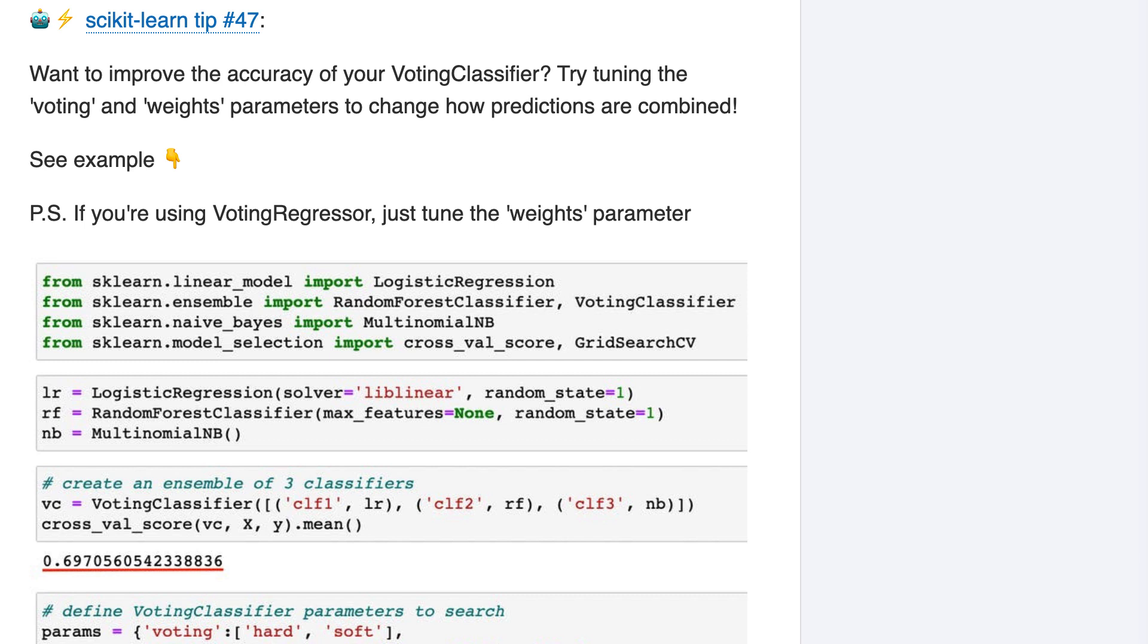Okay, in the previous tip, we talked about how you can combine multiple models using voting classifier, and the resulting ensemble will usually have a higher accuracy than any of the individual models.